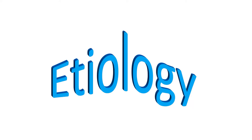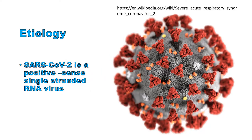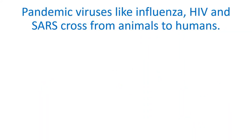Etiology. When we discuss a disease, we follow the core of pathology: etiology, pathogenesis, morphology, and clinical course. The etiology means the cause of the disease. The cause of COVID-19, SARS-CoV-2, is a positive-sense, single-stranded RNA virus. Pandemic viruses like influenza, HIV, and SARS cross from animals to humans — influenza from birds, HIV from chimpanzees, and SARS-CoV-1 and SARS-CoV-2 most likely from bats.